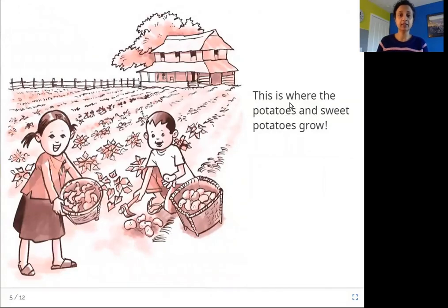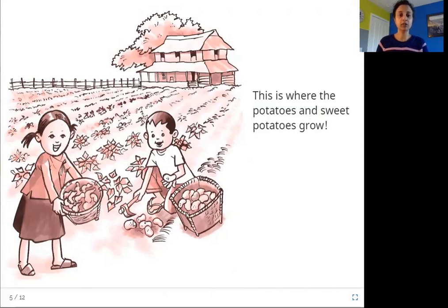This is where the potatoes and sweet potatoes grow. Can you see what these children are doing here? They are taking out potatoes and sweet potatoes. The potatoes and sweet potatoes are buried in the ground — that's where they grow, under the surface of the ground, in the soil. They can be taken out and eaten.